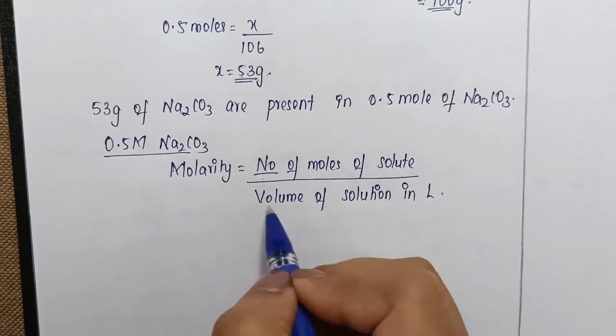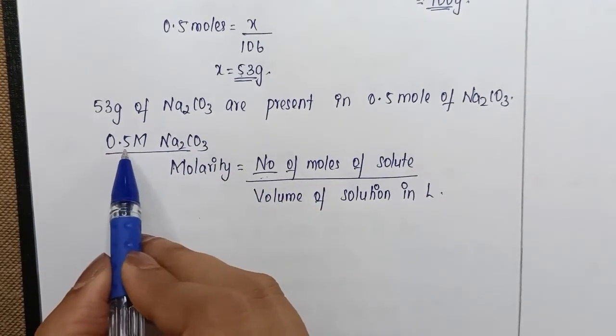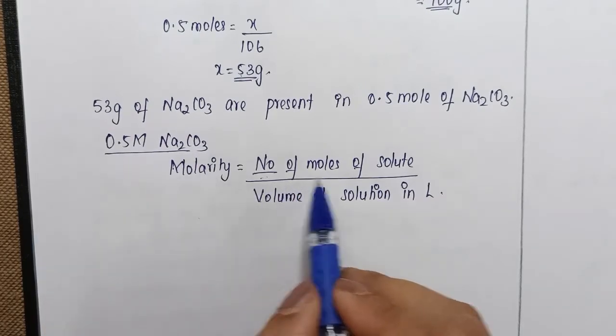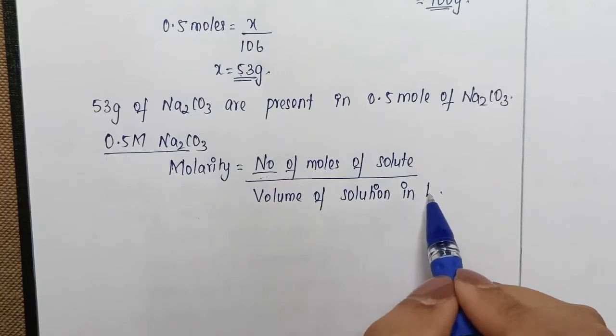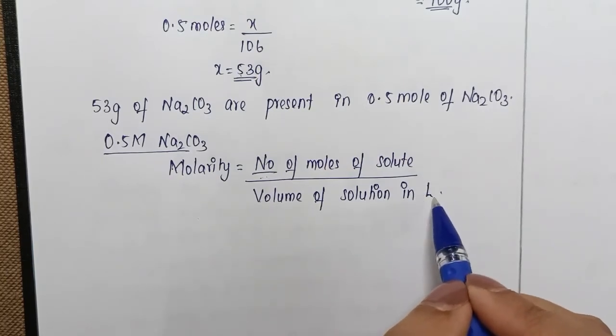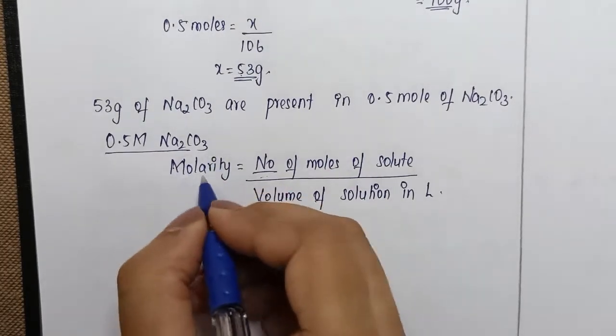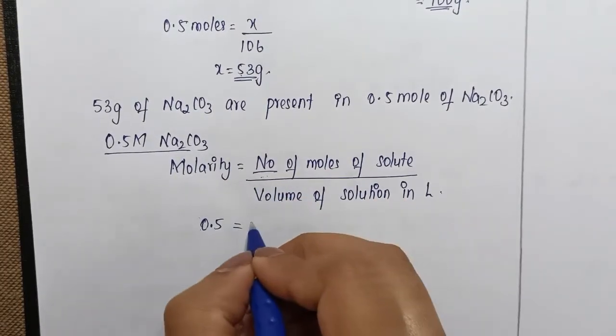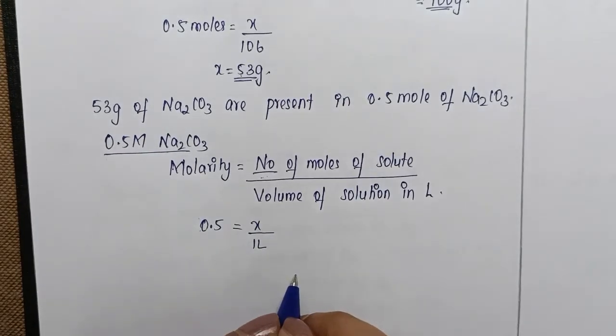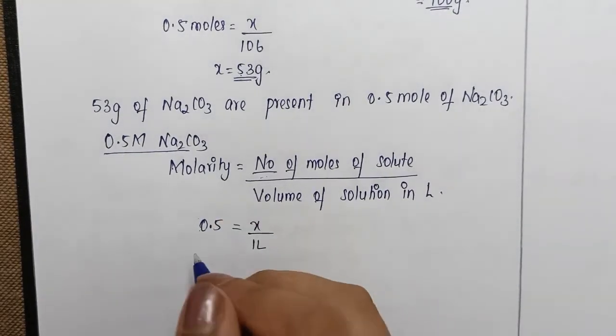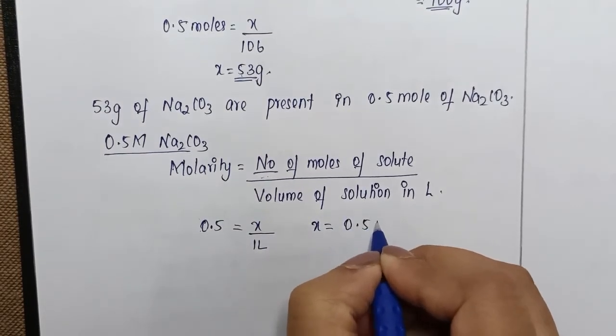In this we need to check and find out a few things. Here we can write that molarity is already given to us: 0.5 molar. Number of moles we don't know, we need to find out. Volume of solution in liter we generally take as common: one liter. So 0.5 molar is the molarity, number of moles we don't know, volume of solution in liter I'm just taking one liter. When I cross multiply, x value is coming to 0.5 mole itself.